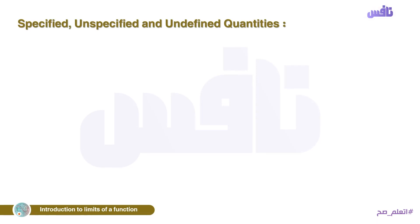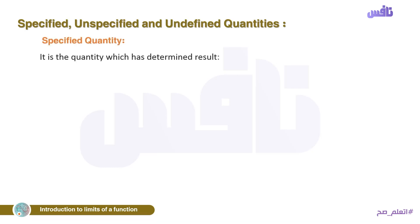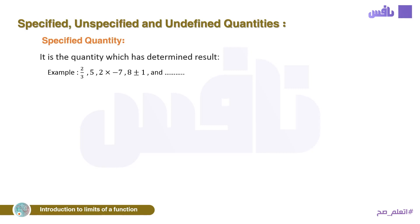Let us know what a specified quantity is. A specified quantity is a quantity which has a determined result, meaning any operation that gives you a final result: 2 over 3, 5, 2 times negative 7 gives negative 14, 8 plus 1 equals 9, 8 minus 1 equals 7, and so on. It will give you a fraction, decimal — anything belonging to the real numbers. If you know the number, it will be a specified quantity.